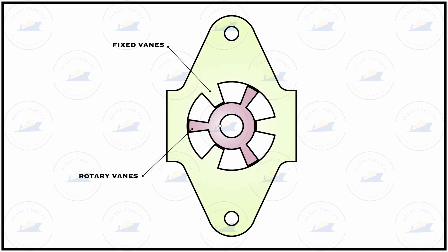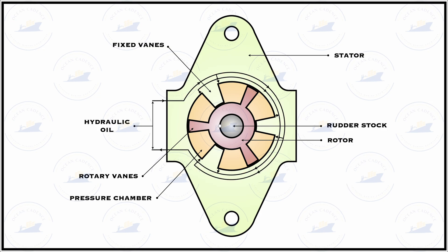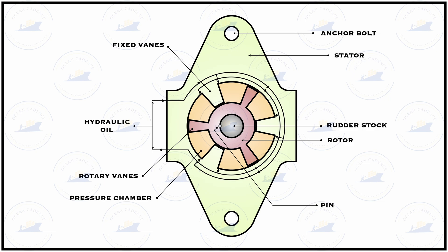The fixed vanes are attached to the stator, whereas the rotating vanes are attached to the rotor. The stator, the rotor, the fixed vanes, and the rotary vanes together make the entire pressure chamber where oil is supplied for rudder stock movement. The rudder stock is attached to the rotor with the help of either a pin or a key, because it is impossible to access the annular area and provide other securing media such as doweling or bolting. The stator uses the anchor bolt to be attached further.